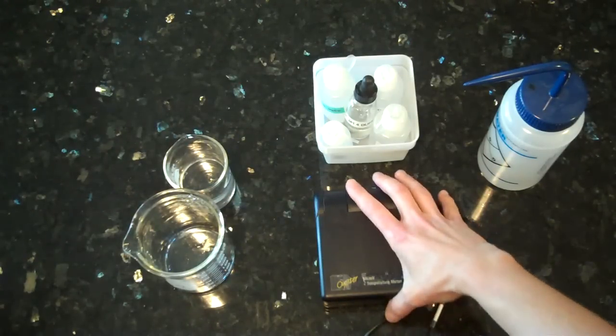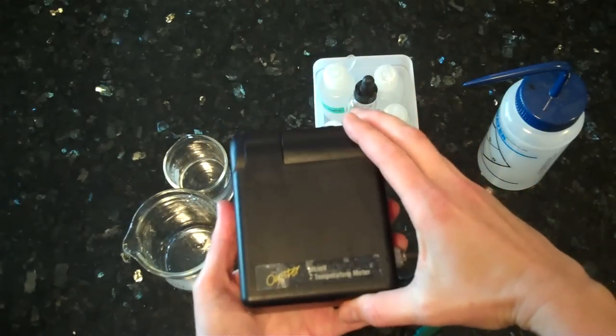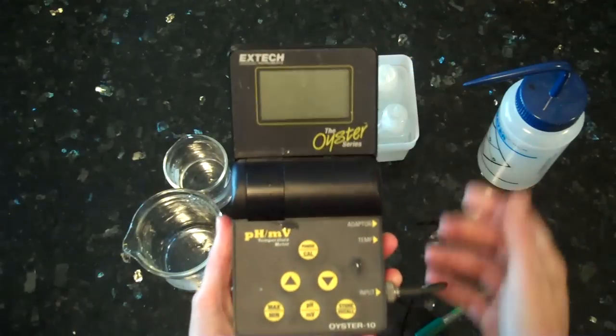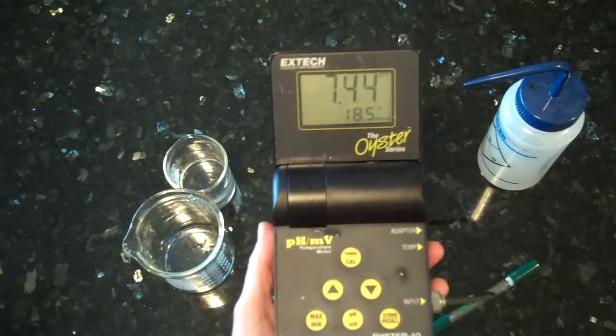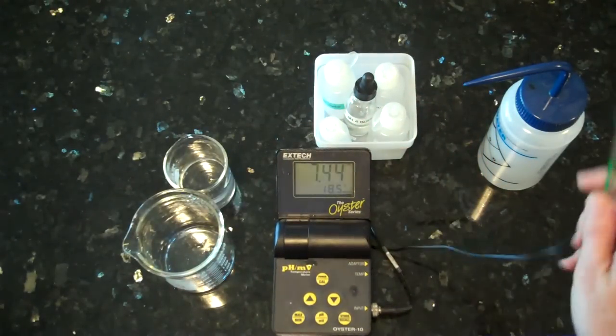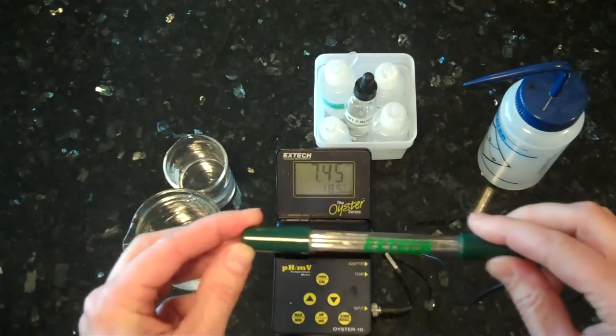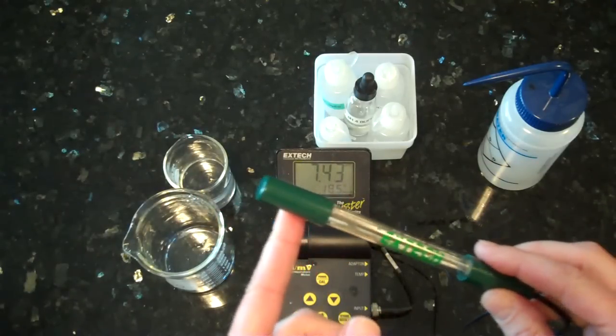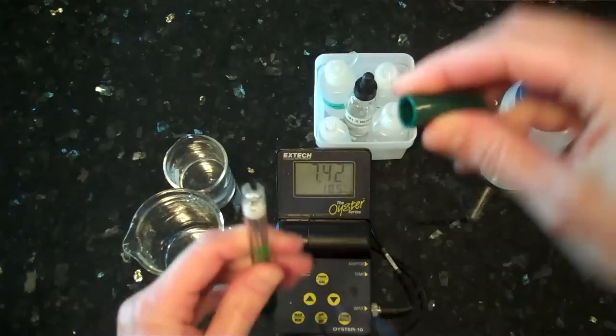Our pH meters are shown here. The way you use it is simply to open it up. There is a power button, and you turn it on. Now attached to this pH meter is a pH probe, and the pH probe has a green cap. Before you use the pH meter, you need to remove that cap.